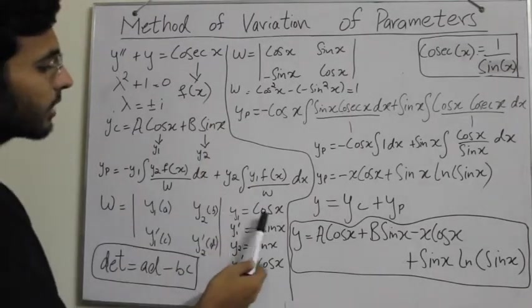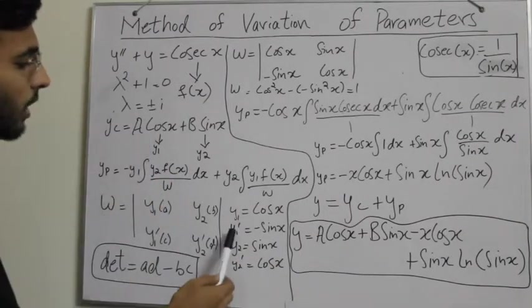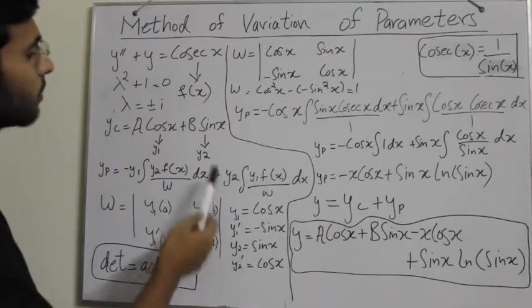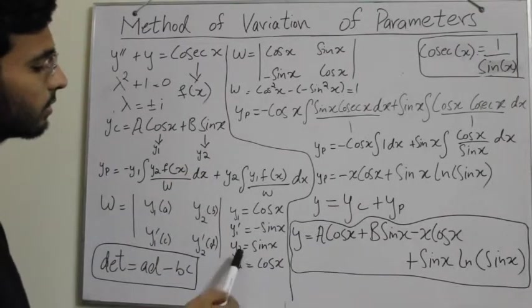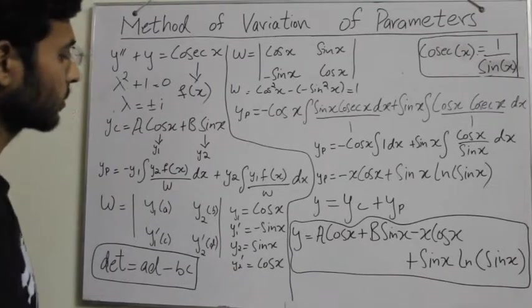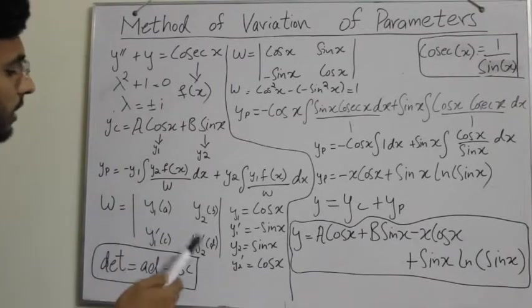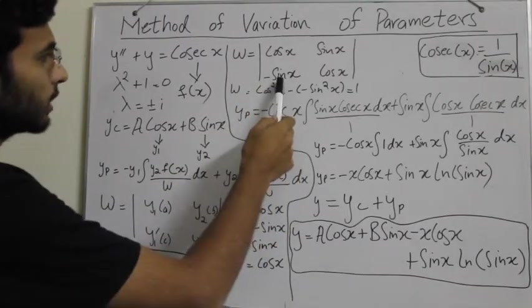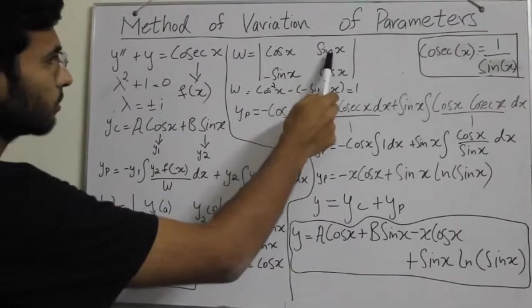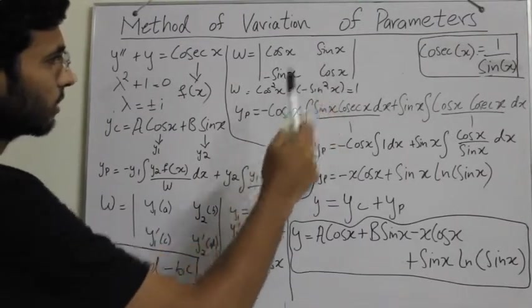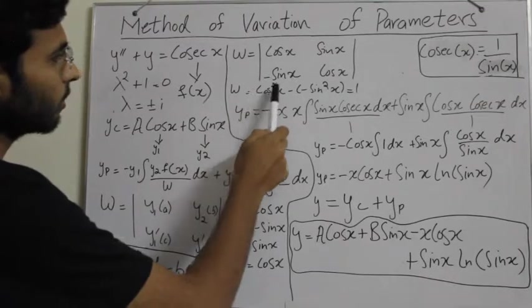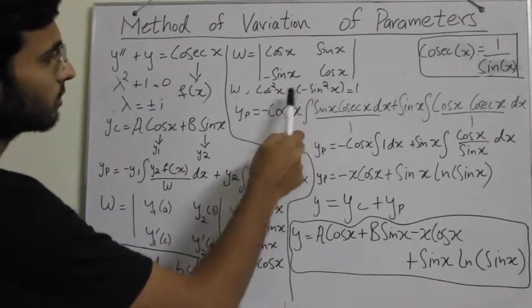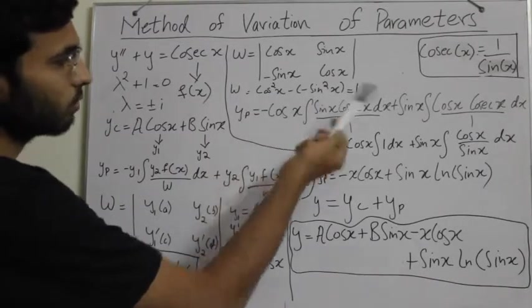We have y1 as cos x, y1 dash is the derivative of cos x which is minus sin x. y2 is sin x and the derivative of y2 is cos x. So we substitute the values: omega equals cos x times cos x minus minus sin x times sin x. So ad is cos squared x, minus bc is minus sin squared x, so that becomes cos squared x plus sin squared x which is 1.